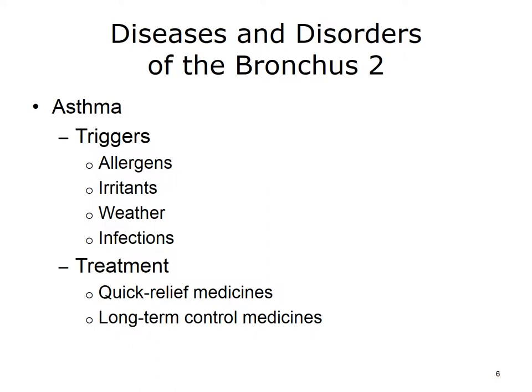Certain things trigger asthma. These include allergens like mold, pollen, and animals. Irritants like cigarette smoke and air pollution can also trigger asthma. Another trigger is the weather — cold air and changes in temperature often trigger asthma attacks. Exercise can also trigger asthma. Finally, infections like the flu or the common cold can make asthma worse. Asthma is treated with two kinds of medicines: quick relief to stop symptoms and long-term control medicines to prevent symptoms.